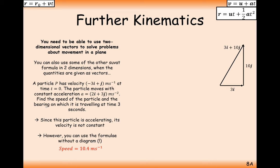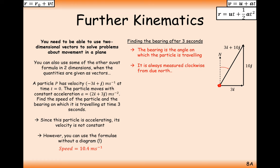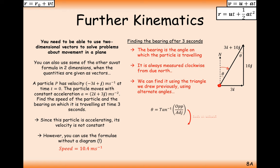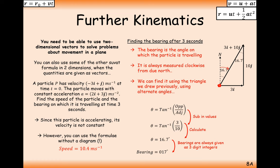For the bearing at 3 seconds, the particle is moving 3 to the right and 10 upwards. Bearing is always measured clockwise from north, so draw in the north line. Working out the angle inside the triangle first: θ = tan⁻¹(3/10) = 16.7°. Using the Z-angle rule, the bearing is 017°. Alternatively, the angle from north is 90 − 73 = 17°, giving the same bearing.